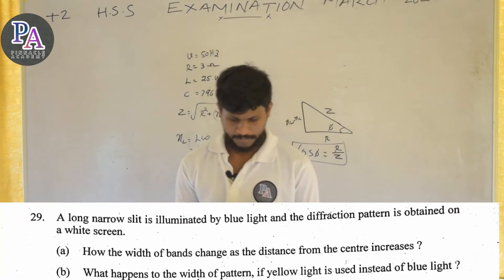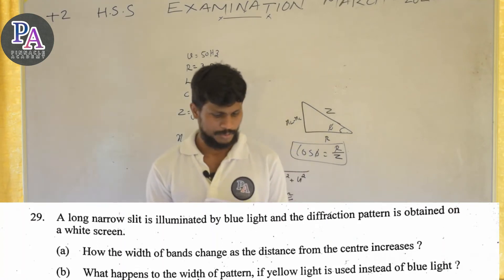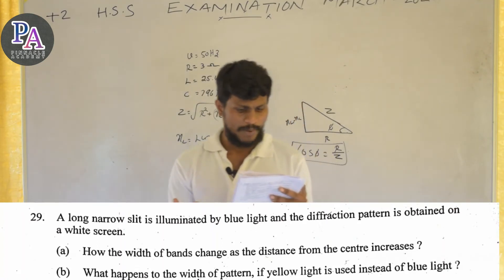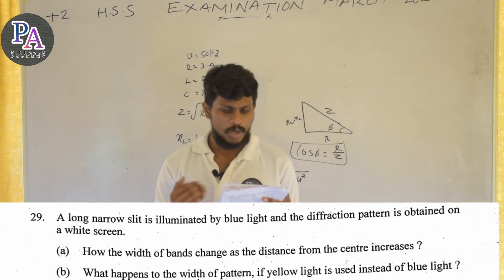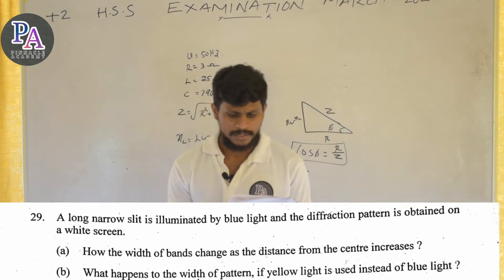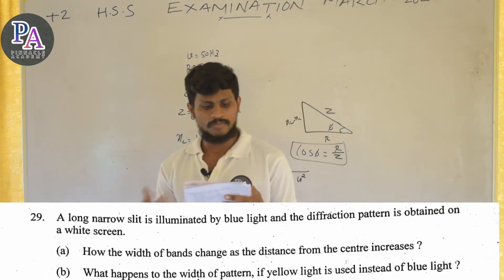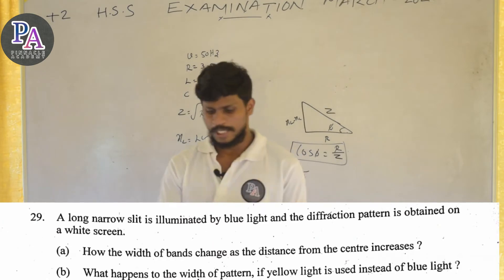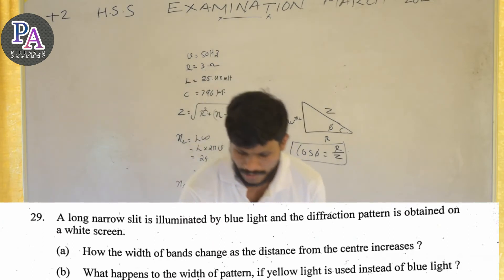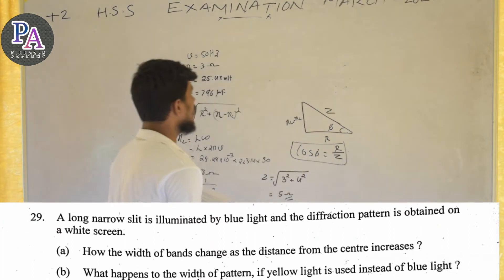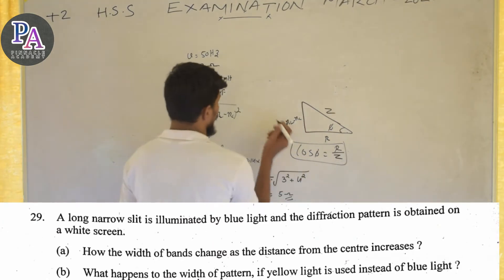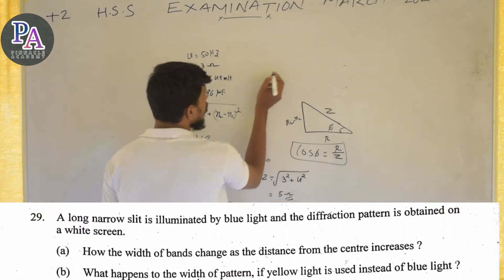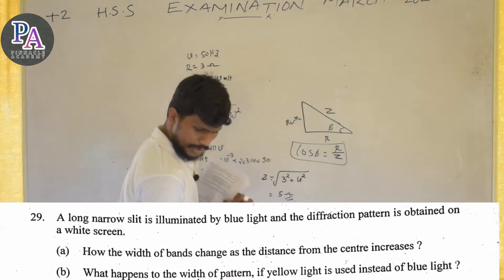What happens to the pattern if yellow light is used instead of blue light? The band width equation — using yellow light versus blue light — gives a different band width. The equation for band width is given by the fringe width formula.